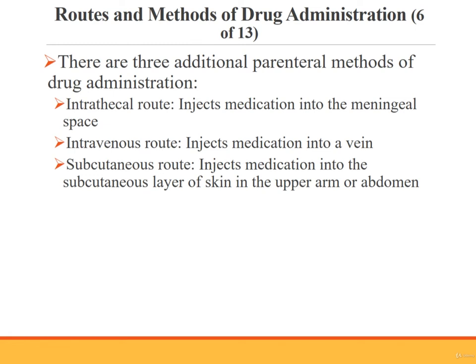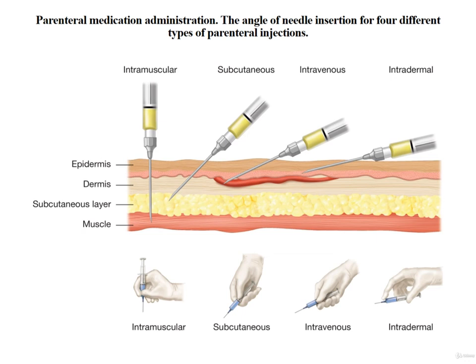In addition to those parenteral methods, there are three more. The intrathecal route delivers medication into the meningeal space surrounding the brain and spinal cord. The intravenous route delivers medication very quickly or by continuous drip into the veins. The subcutaneous route is administered into the subcutaneous layer of skin, usually the upper outer arm or abdomen, and is often used for insulin injection by diabetic patients. This slide also illustrates the angle of needle insertion for four different types of parenteral injections.